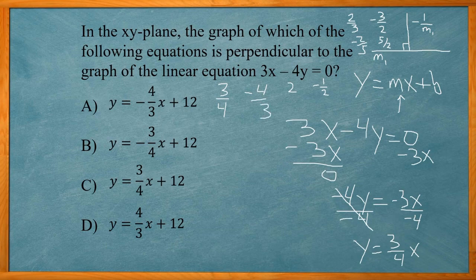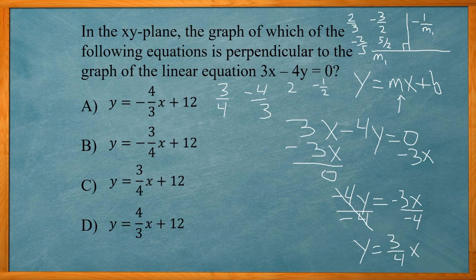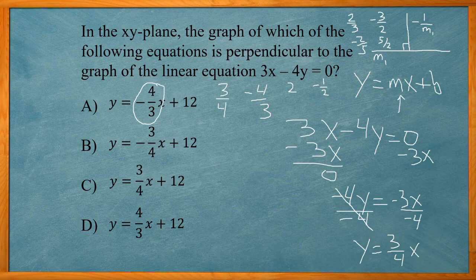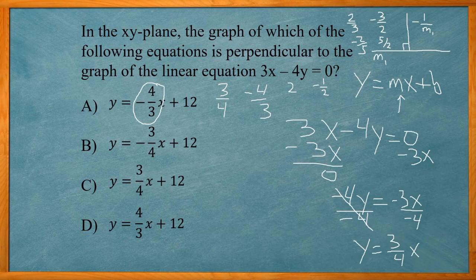So we're looking for a line that has negative 4 thirds as its slope. And all these answers are in the y equals mx plus b form, slope intercept. So if we have negative 4 thirds, that's found in answer choice A. So that would be our answer.